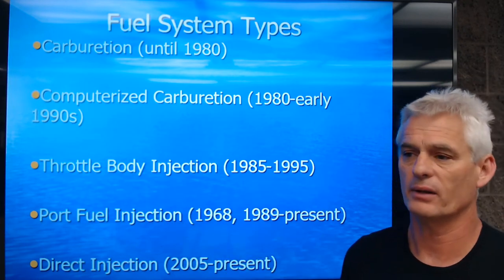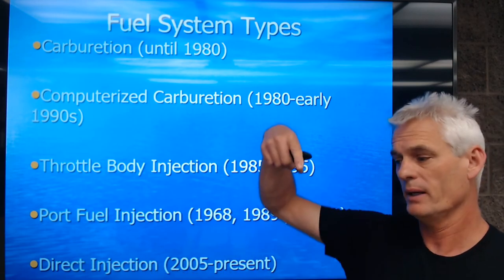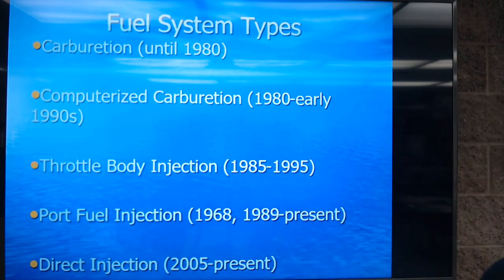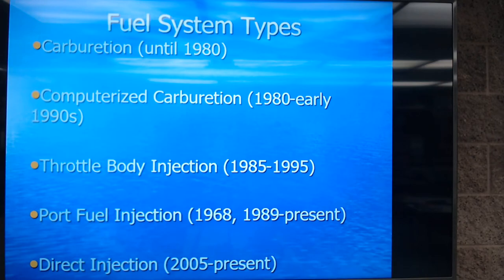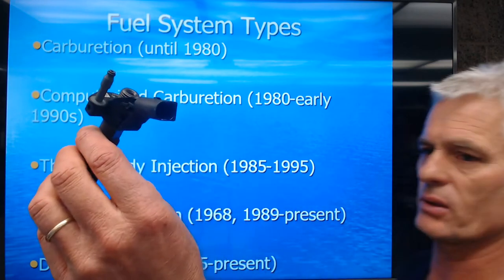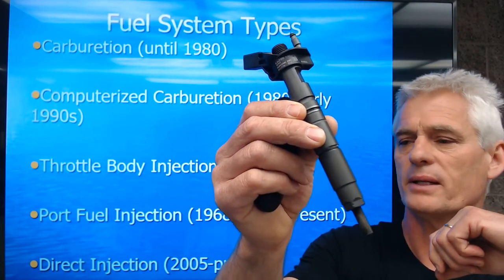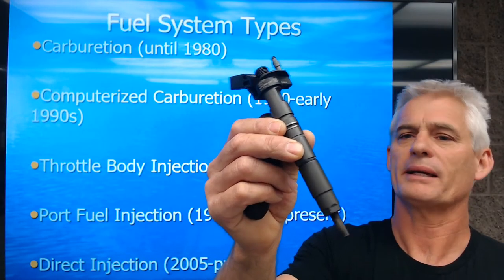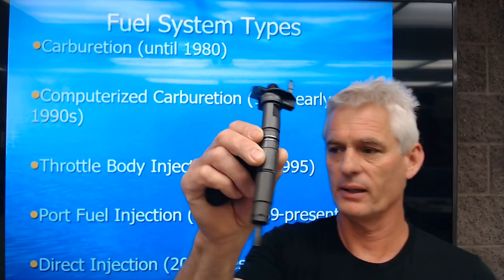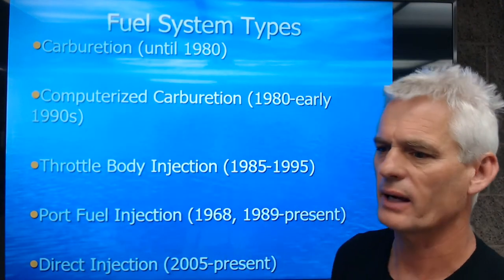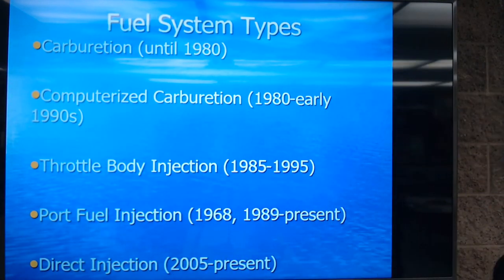Direct injection, starting around 2005 and continuing to the present, puts an injector straight inside the combustion chamber. This is actually a diesel direct injector — the metal tip sits in the combustion chamber and sprays at 10,000 PSI. A gasoline one would look fairly similar but not quite as heavy, and gasoline direct injectors typically spray upwards of 2,000 PSI.